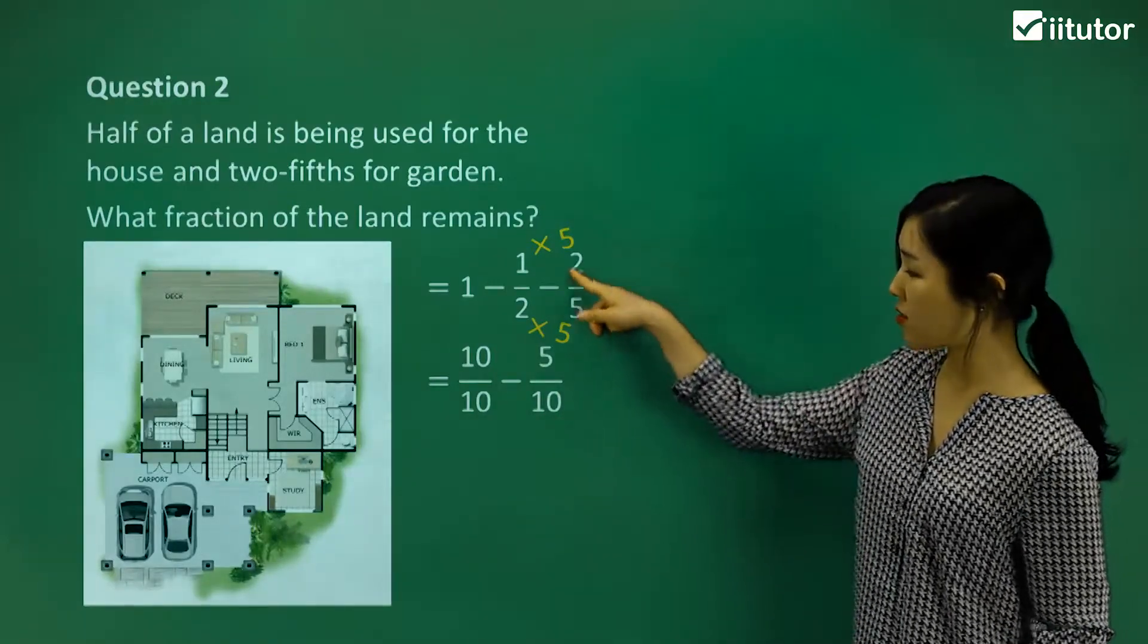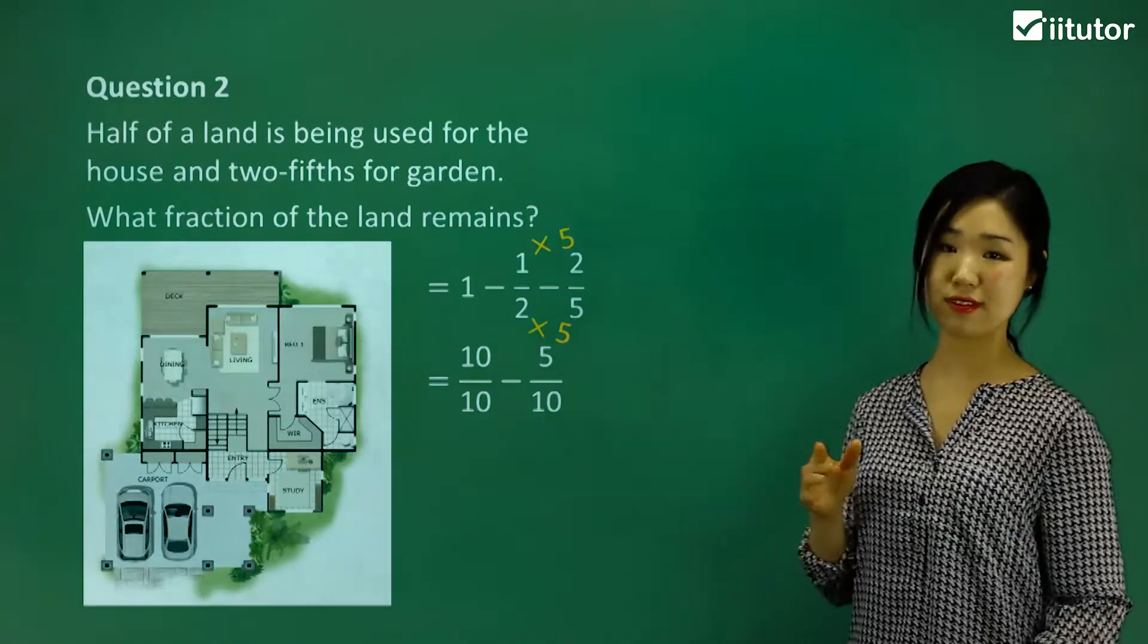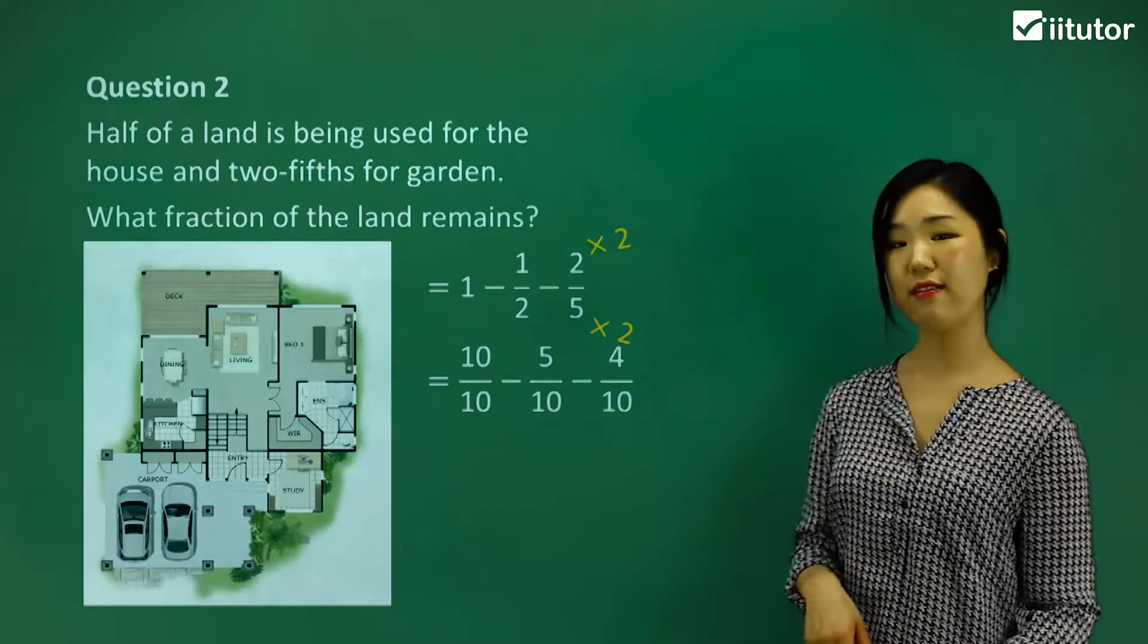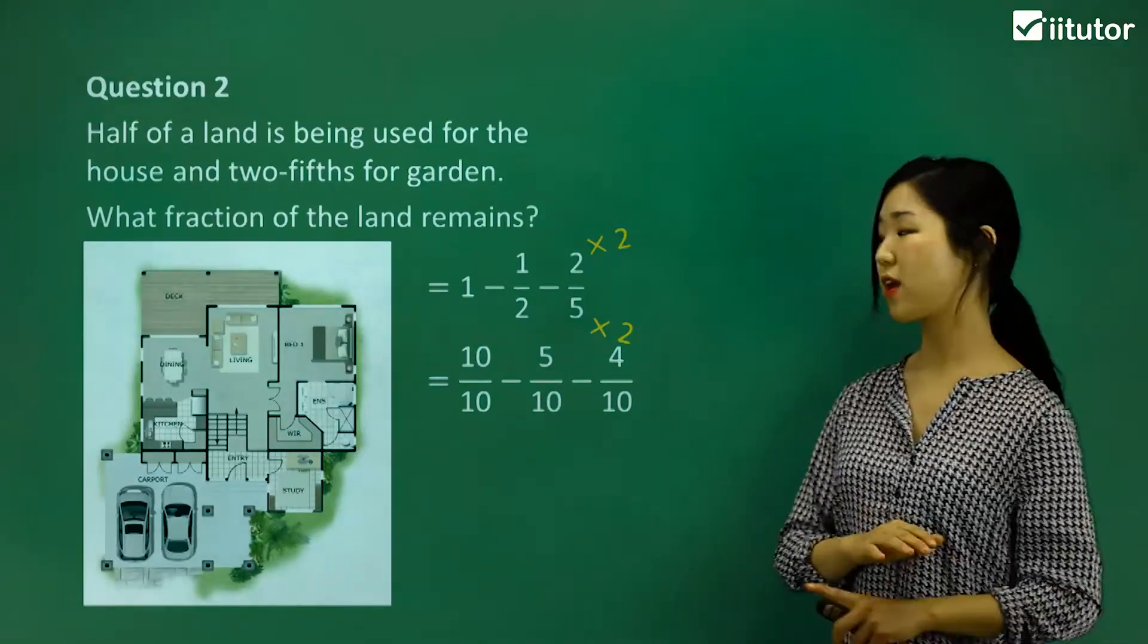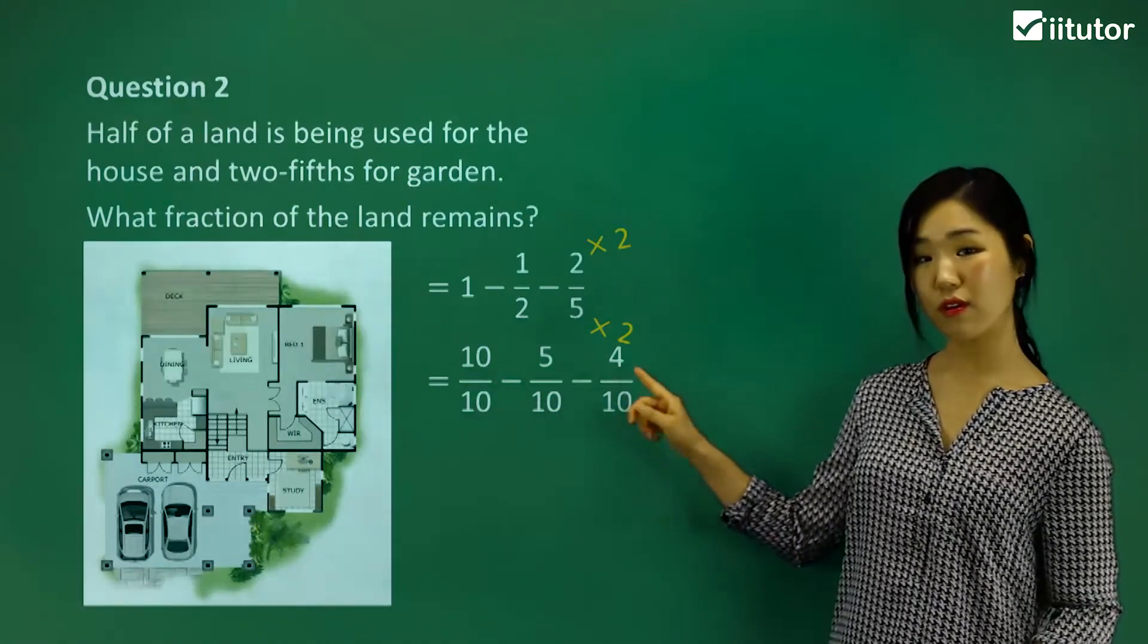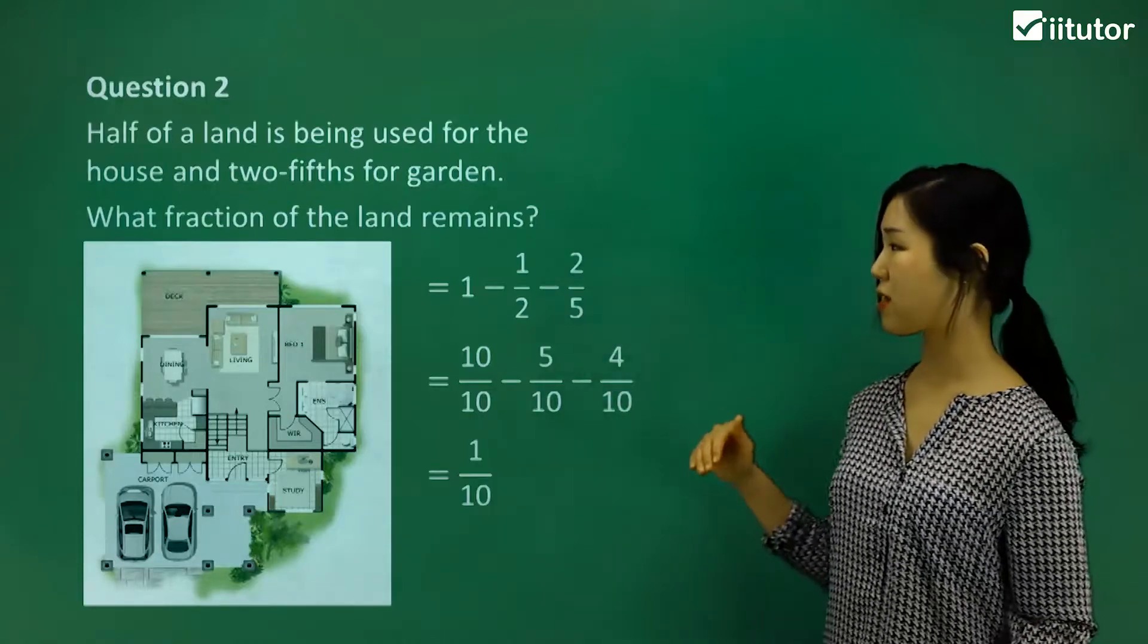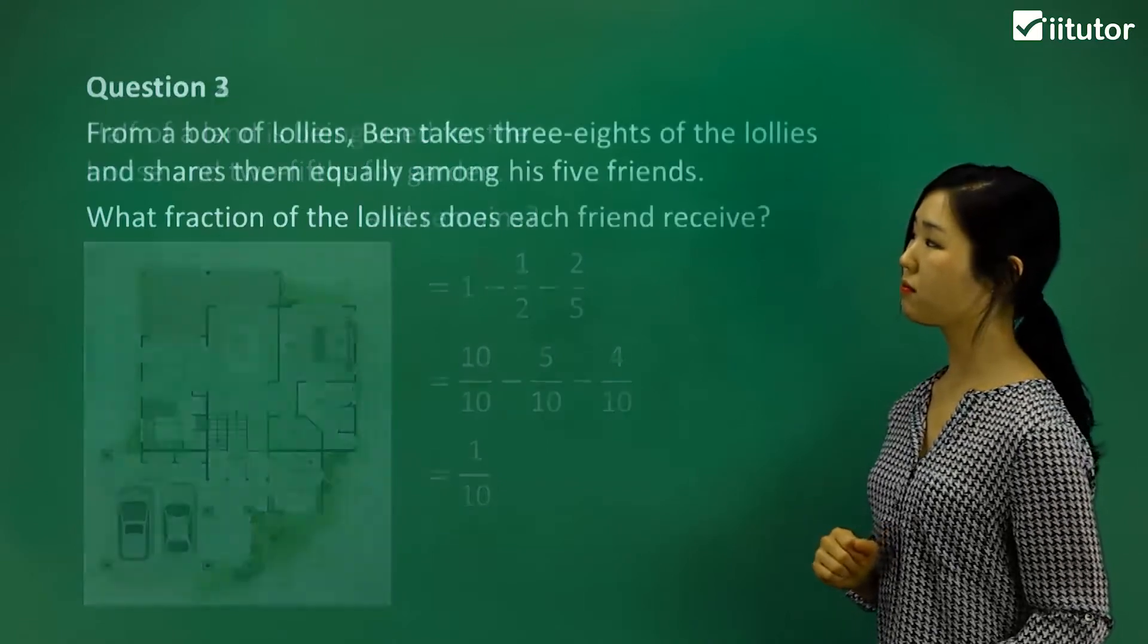Five times what is 10? Two. Five times two is 10. So I'm going to multiply the numerator and denominator both by two, and that becomes four over 10. Now you can see all the denominators are 10. We can just work with the numerators. What's 10 minus five minus four? Hopefully you got one. So it's one out of 10 that we have remaining. Make sure you work through that process when doing subtraction of fractions, making the common denominator.